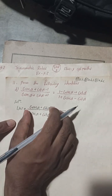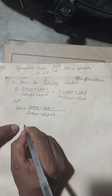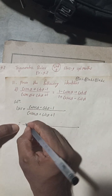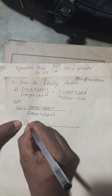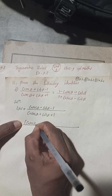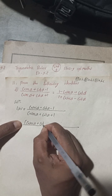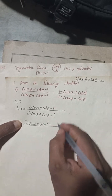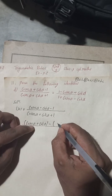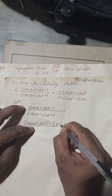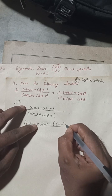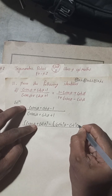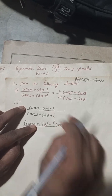We have written the LHS part. Now here, we write (cosec α + cot α) in a bracket, and this is minus 1. In place of 1, we will write cosec²α - cot²α, because this is equal to 1.